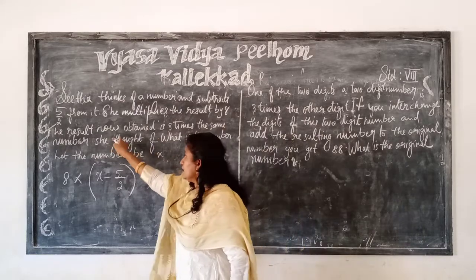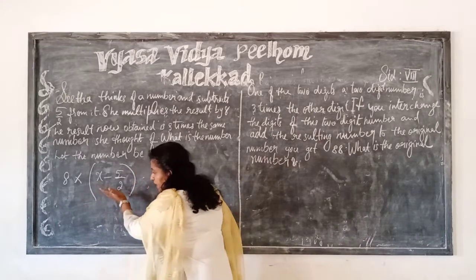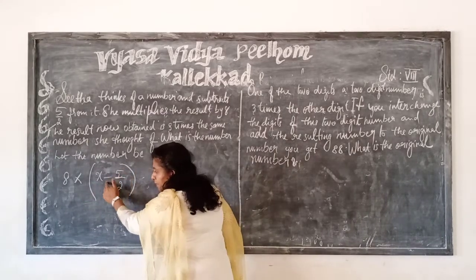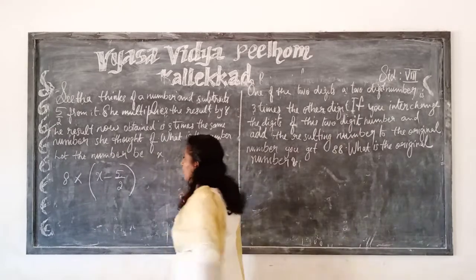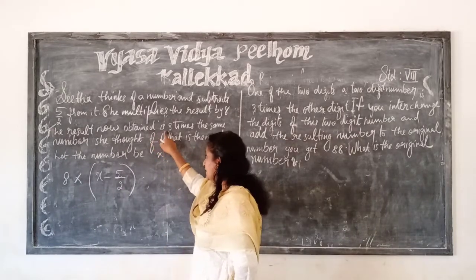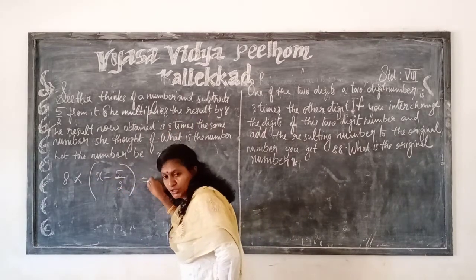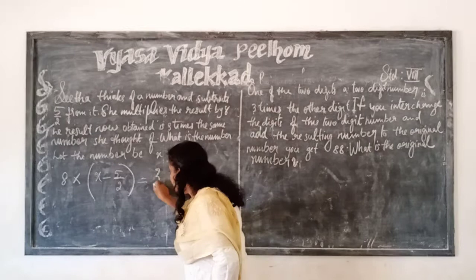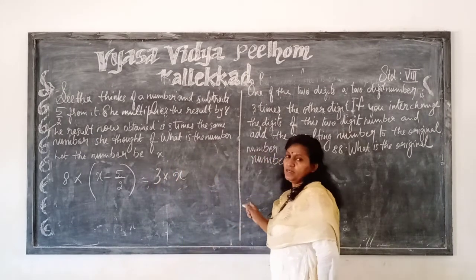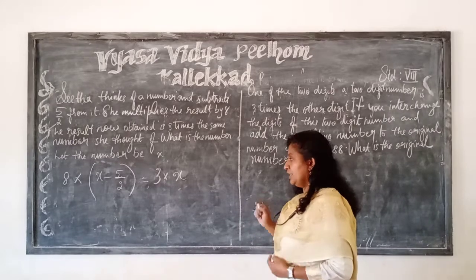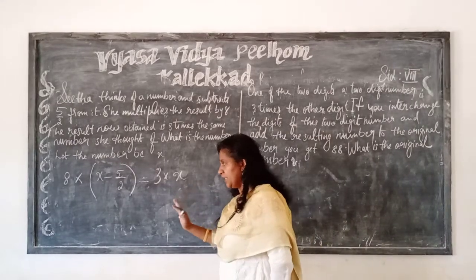The result now obtained by subtracting 5 by 2 from the number and multiplying the result by 8 — this number obtained is 3 times the same number. So 8 times (x minus 5 by 2) is equal to 3 times the same number. This is the linear equation — that is the required equation.